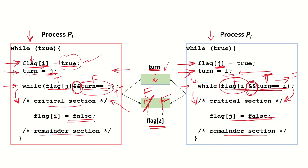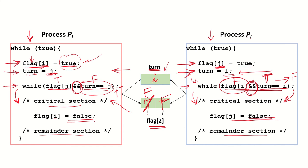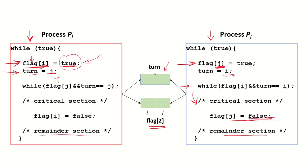Now let's verify whether Peterson's solution fulfills the requirements of the critical section problem. The first requirement is mutual exclusion — no more than one process can be in the critical section at a time. This condition is satisfied: when PI was in the critical section, PJ was stuck in the while loop and could not enter. If the final value of turn had been j, then PJ would have entered first followed by PI. At any given point in time, only one process is in the critical section.